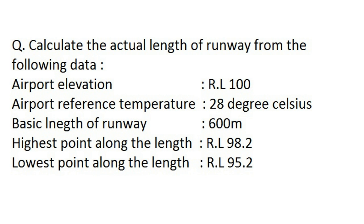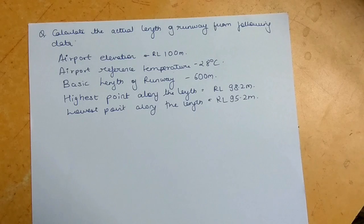Now let's solve a problem to calculate the actual length of runway from the given data. The airport elevation is 100 meters above mean sea level, the airport reference temperature is 28°C, the basic length of runway is 600 meters, the highest point along the runway is 98.2 meters reduced level, and the lowest point along the runway is 95.2 meters. As you can see, the runway is situated around two to three meters below the airport elevation.